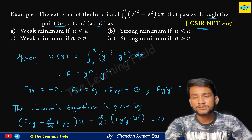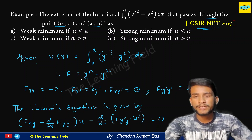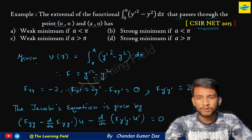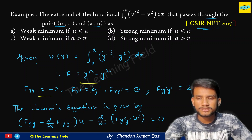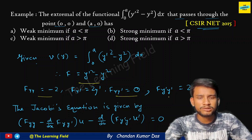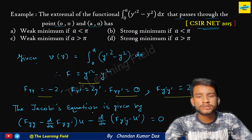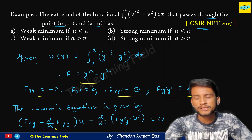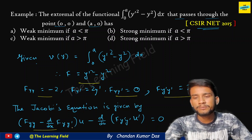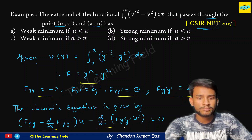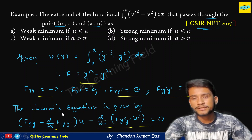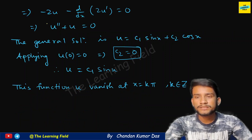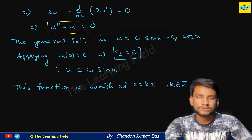Given F = y'² − y², we compute the required terms: F_yy = −2, F_yy' = 0, and F_y'y' = 2. Jacobi's equation is: F_yy minus d/dx(F_yy')·u minus d/dx(F_y'y')·u' = 0. Substituting these values, Jacobi's equation becomes u'' + u = 0.